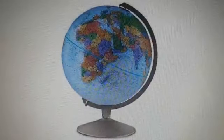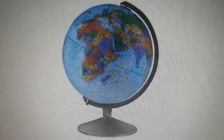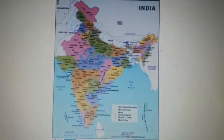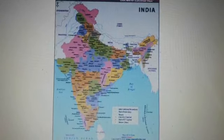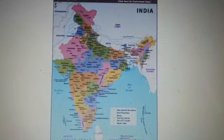It is difficult to see the details of every country on the globe. To see the details of countries, states, cities, etc., we use a map.